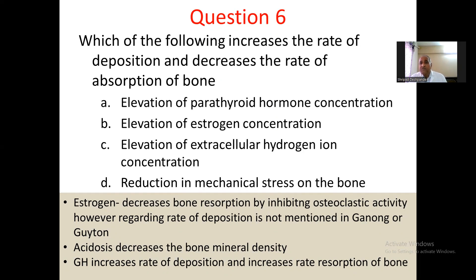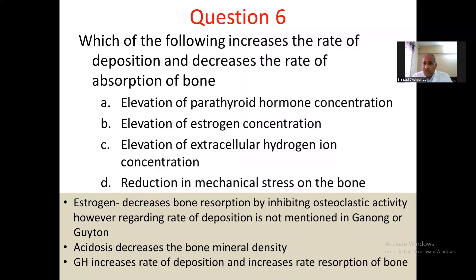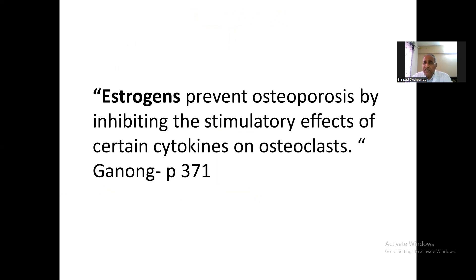Estrogen decreases bone resorption by inhibiting osteoclastic activity. Hence in postmenopausal women, there is osteoporosis because the inhibition of osteoclastic activity is absent, resulting in more osteoclastic activity and more osteoporosis. Regarding the rate of deposition, no clear mention was found in either Ganong or Guyton. Hence we do not have the correct response for question number 6. Estrogens prevent osteoporosis by inhibiting the stimulatory effects of certain cytokines on osteoclasts — refer to Ganong page 371.